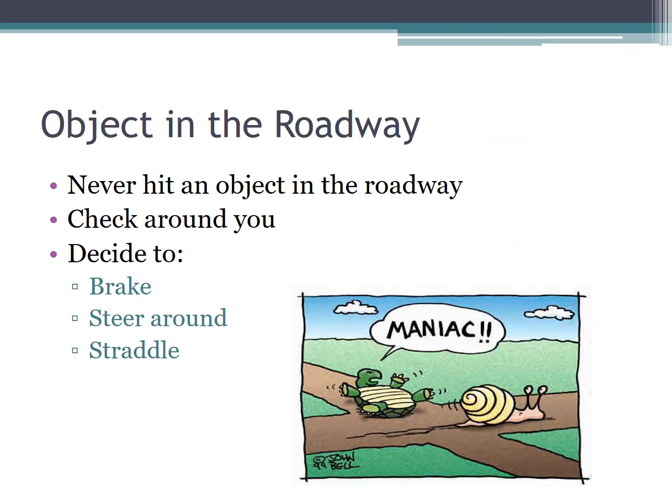If there's an object in the road, never hit it. If you can avoid it, brake and steer around it, or you can straddle it — if it's something in the middle of the road that will fit under your car, just drive right over the top of it. That's called straddling.